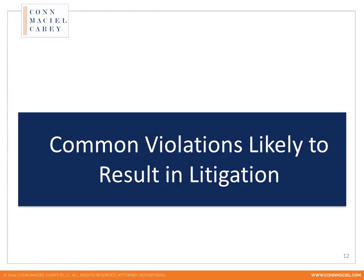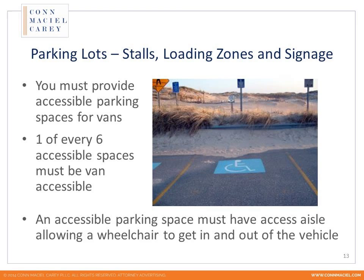I'm going to cover some of the common violations that result in litigation. The most popular are parking lots. This doesn't require anyone to come onto your property — someone can simply drive by and see if you have accessible parking. If you don't, that signals to them that there may be other areas within your property that are not accessible, opening the door to a broader lawsuit. You need to provide accessible parking spaces for vans — one out of every accessible space must be van accessible. An accessible parking space must have an access aisle allowing a wheelchair to get in and out of the vehicle.